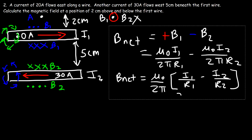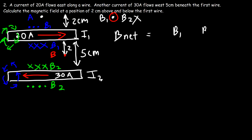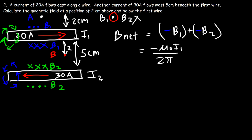Now let's calculate the net magnetic field 2 centimeters below the first wire — call this point B. At point B, both B₁ and B₂ are going into the page, so they're both negative. The net field is −B₁ − B₂, which equals −(μ₀I₁ / 2πR₁) − (μ₀I₂ / 2πR₂).